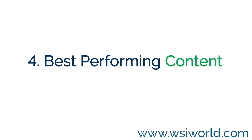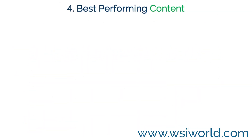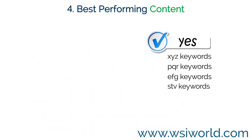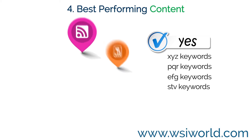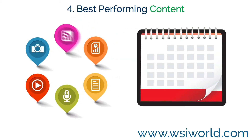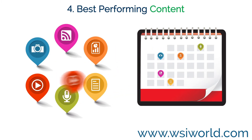4. Best Performing Content. Now you can start digging a bit deeper and plan your own content marketing strategy based around your keywords. Learning what content is visible and where will guide your content creation objectives.